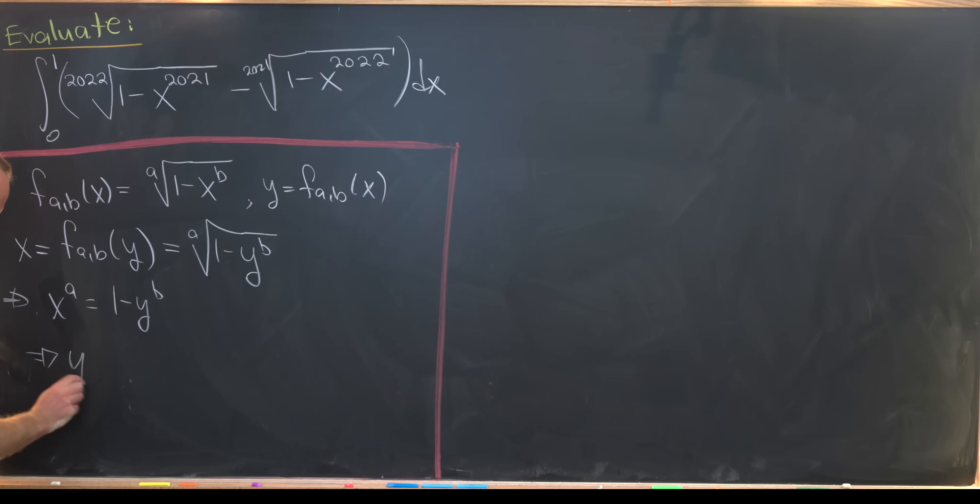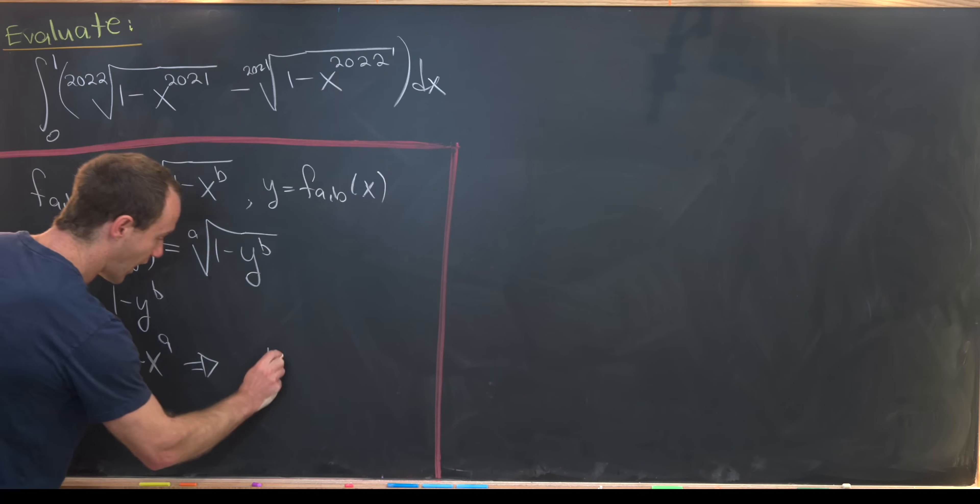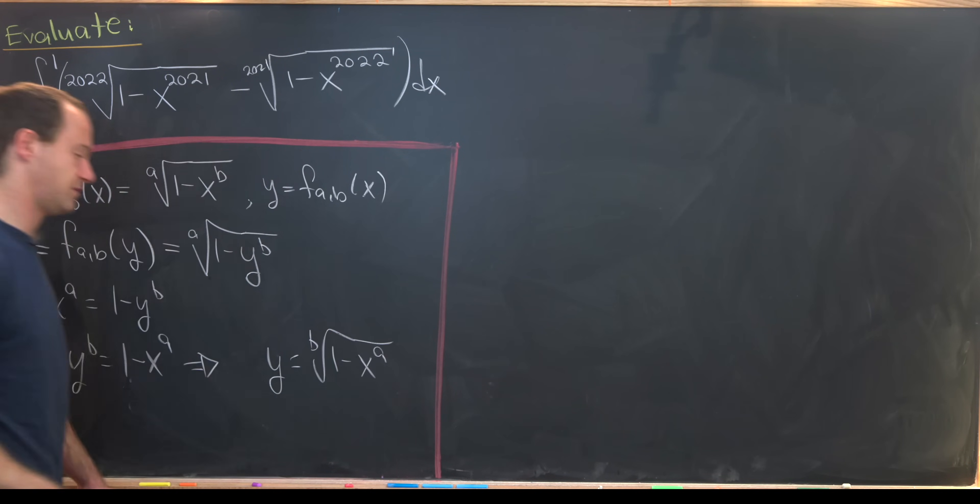That tells us that y to the b is equal to 1 minus x to the a, which means that y is equal to the bth root of 1 minus x to the ath power.